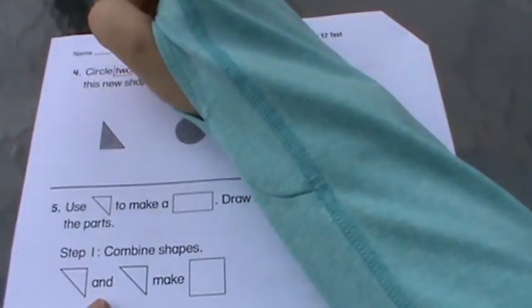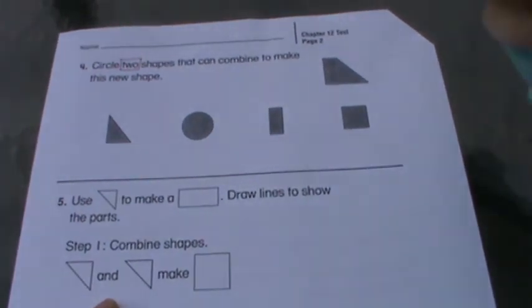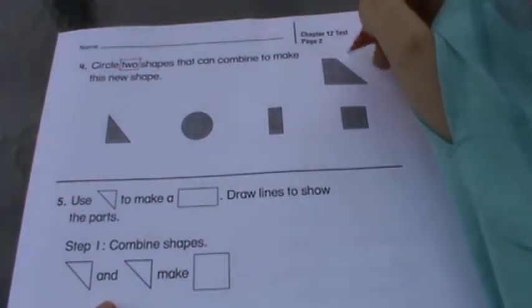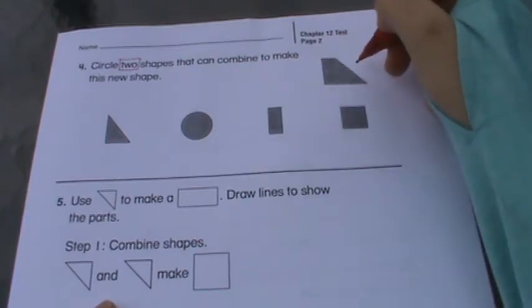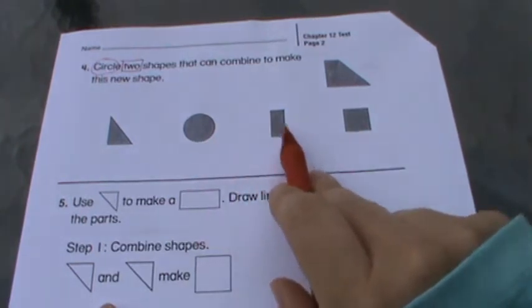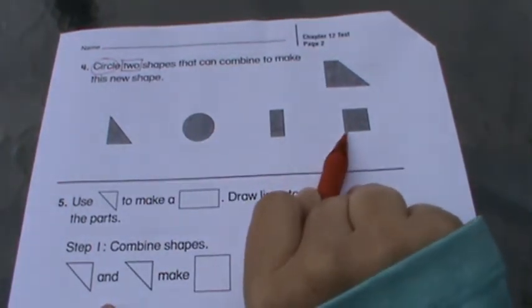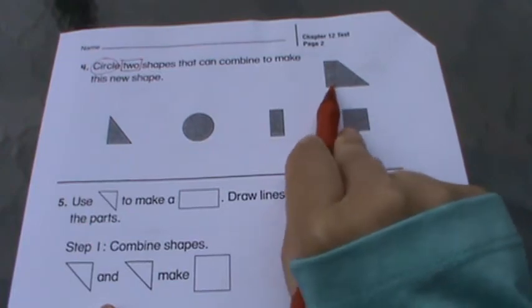Number four, circle two. Circle two shapes that combine together to make this new shape. So you're going to circle them. You're picking two of these. Which two shapes put together make this shape?